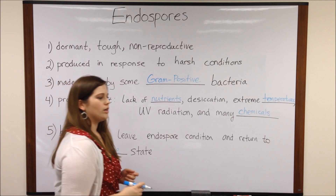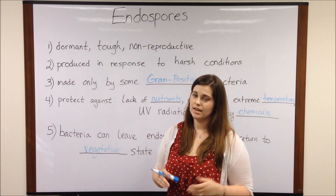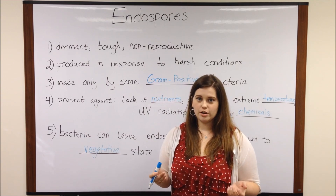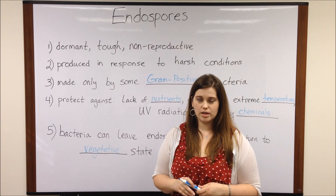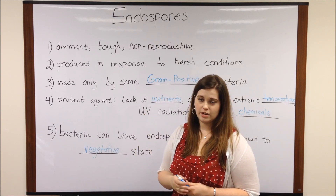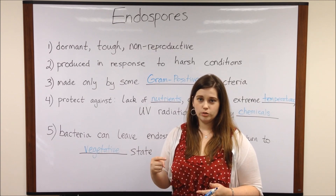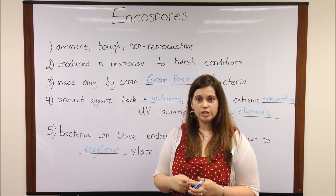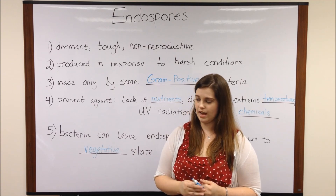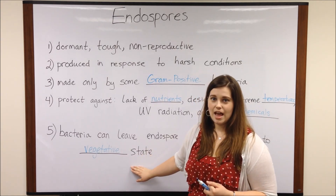This is important for human health because, for example, the bacteria that cause tetanus — you always hear that you get tetanus if you step on a rusty nail. That's because the rusty nail may have endospores of the bacteria that cause tetanus. Once the rusty nail introduces those endospores deep into your skin tissues, which is a very favorable environment for those bacteria, they can then germinate or return to the vegetative state and cause disease.